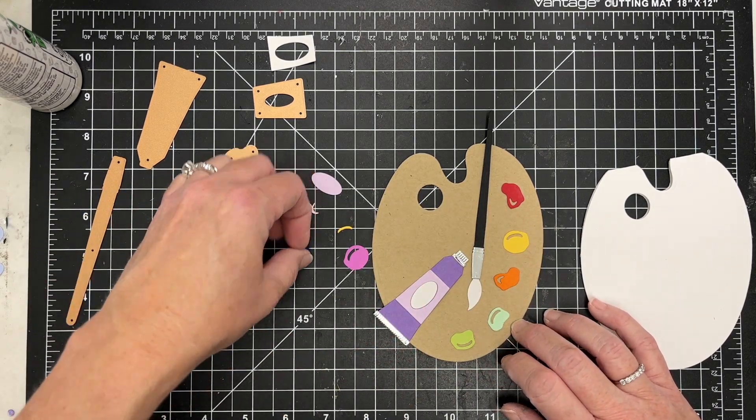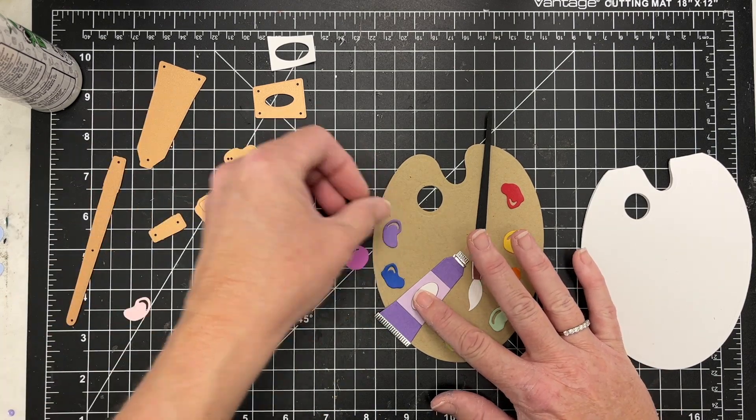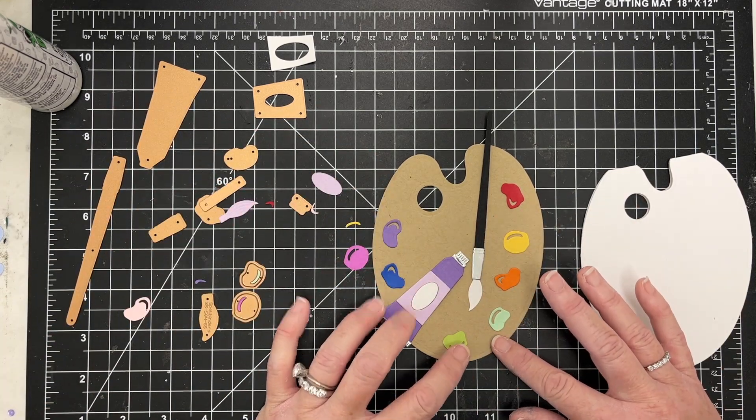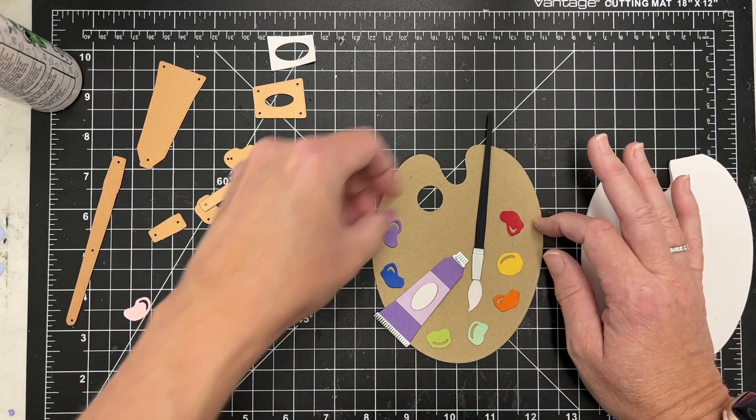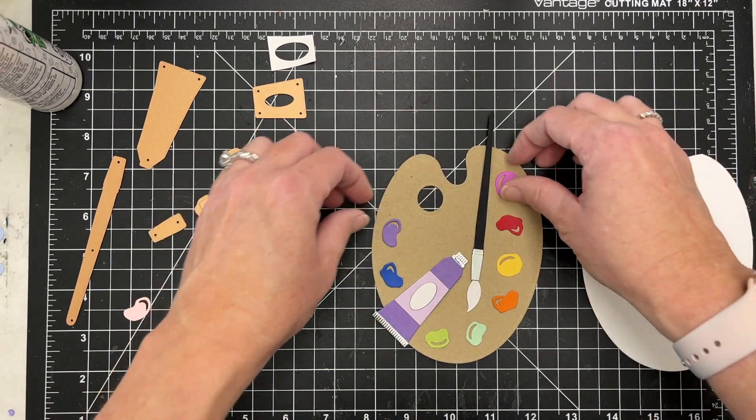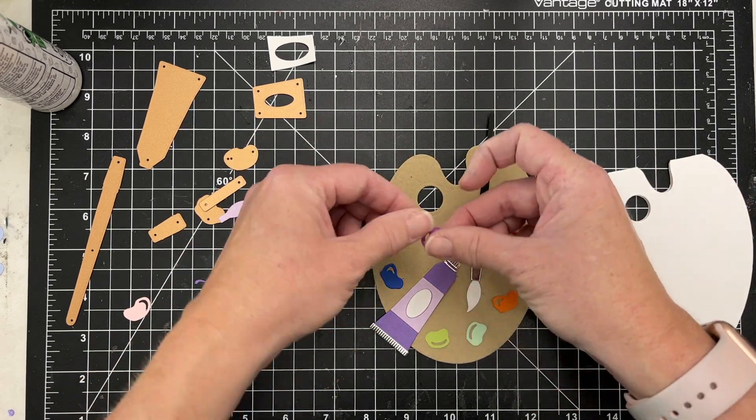I'm following a little bit of a Roy G Biv idea here, but it's not perfect. And so I'm just switching these up, taking the time to get everything exactly where I want it to be, and then I will come back here and start gluing these pieces down.